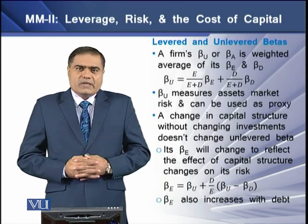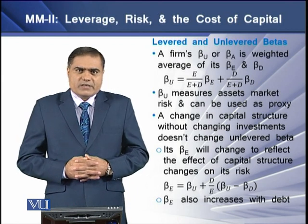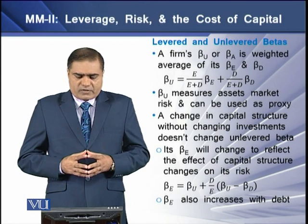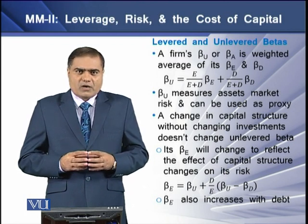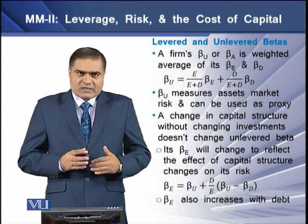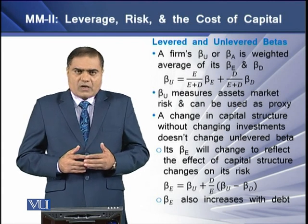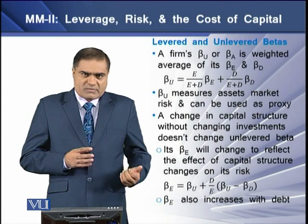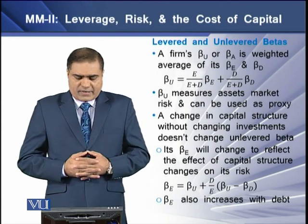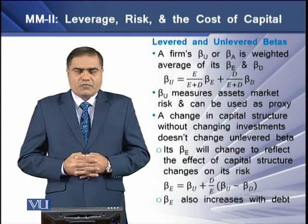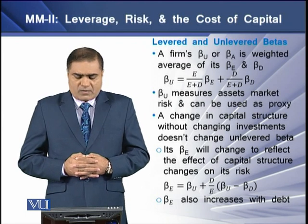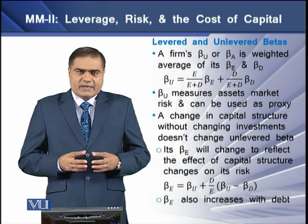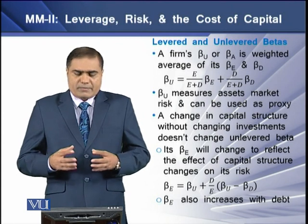Now, what is levered beta and its relation with unlevered beta? We know that a firm's unlevered beta, or its asset beta, is the weighted average of its equity beta and its debt beta. This means that the beta of the unlevered firm is the sum of its proportional equity beta and its proportional debt beta.